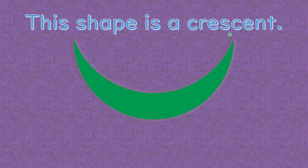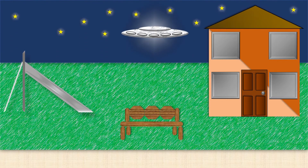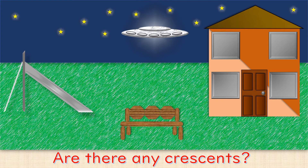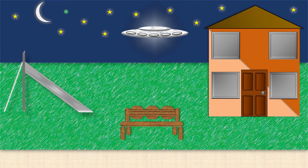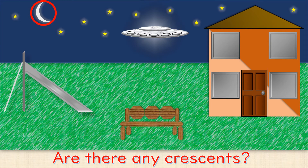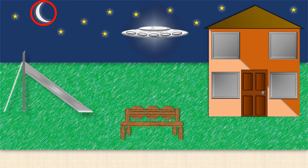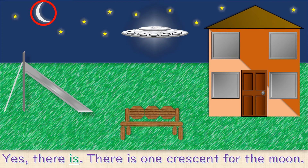This shape is a crescent. Are there any crescents? No, there aren't. Let's add a crescent to the picture. Are there any crescents? Yes, there is. There is one crescent for the moon.